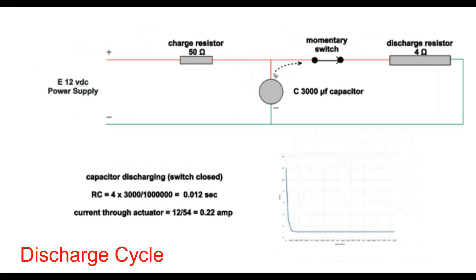So here's an example of the capacitor discharging. When you close the momentary switch, the charge on the capacitor rapidly flows through the resistor, in our case 4 ohms, and discharges according to the curve down below. The RC time constant for that turns out to be 0.012 seconds, which is pretty fast. So you can see, with the small resistor, this discharge happens very, very quickly.